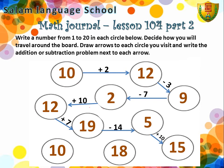The number 5 goes to 15. Draw the arrows and add 10. The number 15 goes to 18. The number is getting bigger; we add 3. Then 18 goes to 10. This means the number is getting smaller; we subtract 8 from 18 to become 10.